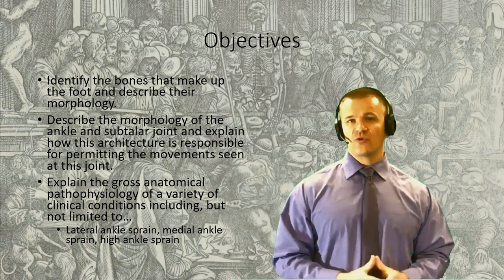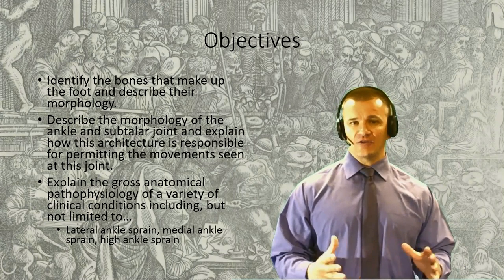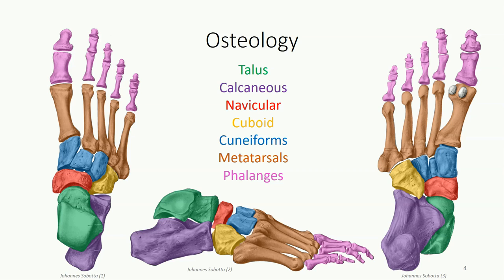Similar to the hand, we can divide the bones of the feet into posterior tarsal bones, which are analogous to the carpal bones; the metatarsal bones intermediately, analogous to the metacarpal bones; and the phalanges distally, which are analogous to the identically named bones of the hand.